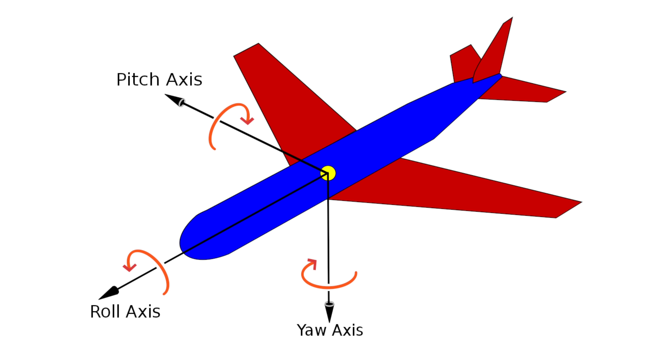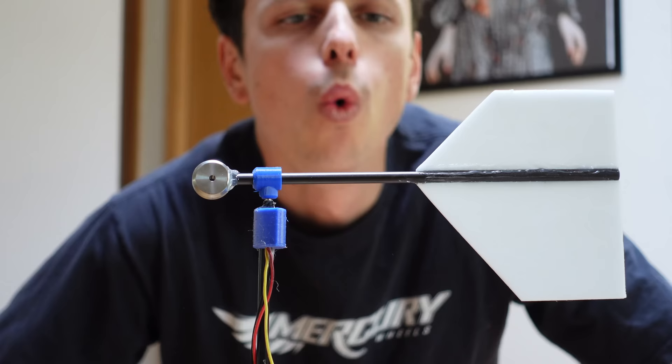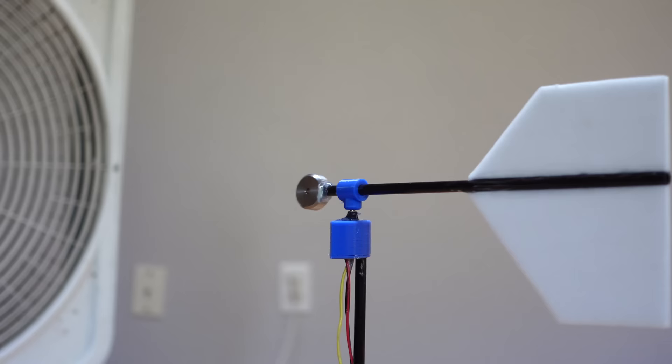Before we start cutting, let's take a look at what makes a properly designed airplane passively stable. We're going to look at each of the three axes of rotation separately. First up is the yaw axis, and it's probably the simplest.